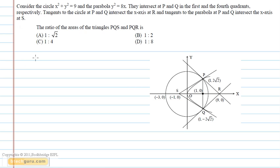In this question, the given circle is x² + y² = 9 and the parabola is y² = 8x.